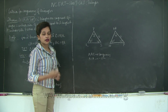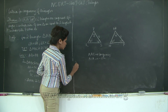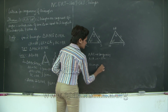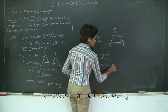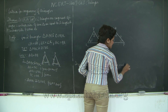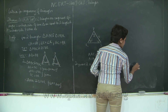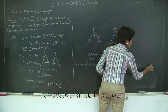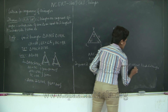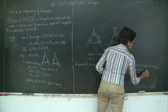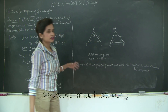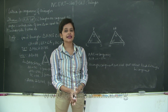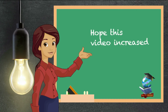Remember, to prove two triangles congruent we need at least one side and two angles to be congruent. With this we conclude the ASA test of congruency. We will take a look at the solved examples in the next class. Thank you, hope this video increased your knowledge.